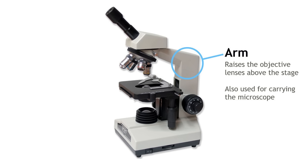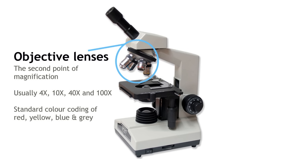The objective lenses are the second point of magnification. They revolve around on what is called the nose piece. There are usually 4 objective lenses, color coded for easy recognition. The 4x is red, 10x is yellow, 40x is blue and the oil immersion lens 100x is grey.